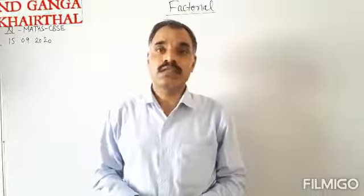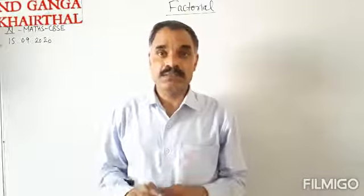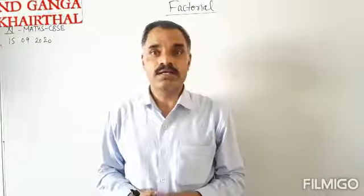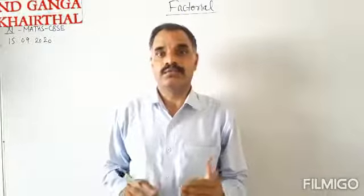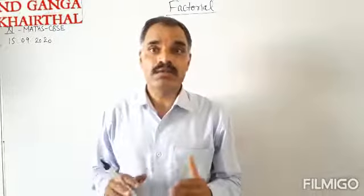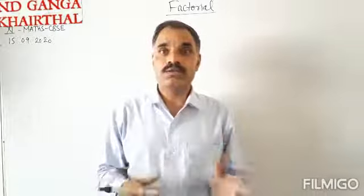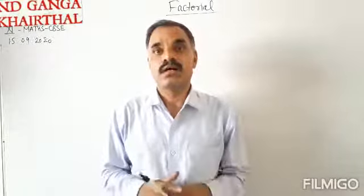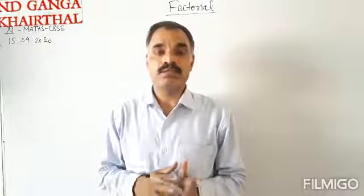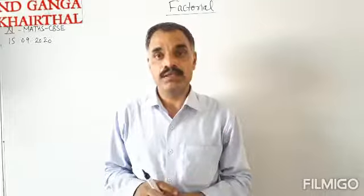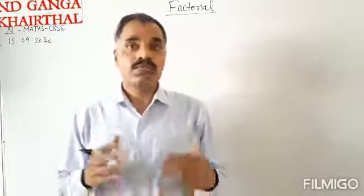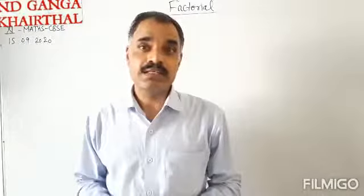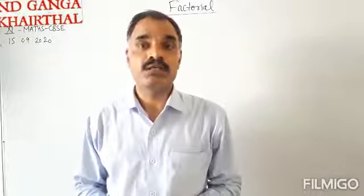Okay, Strengths, Class 11 Mathematics, CVSE. Today we are starting a new chapter that is Permutation and Combination. In permutation and combination, the main topic or main role is of the factorial. So before knowing the permutation and combination, the meaning of permutation and combination and how to find permutation and combination, we have to know about the factorial. Factorial plays an important role in finding the permutation and combination.